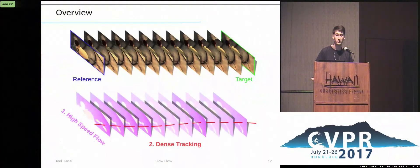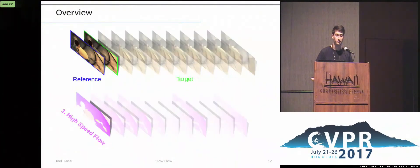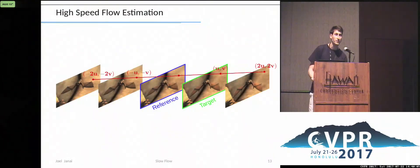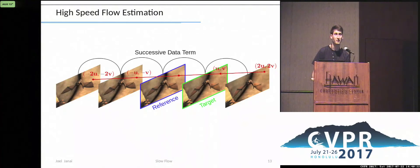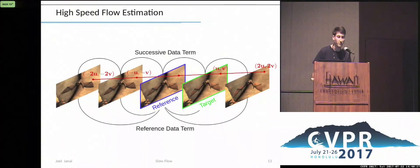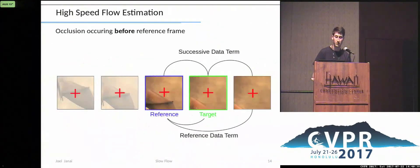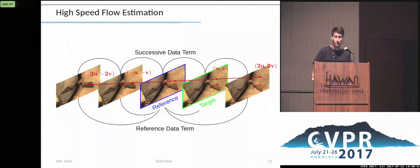Let's focus our attention on the estimation of the flow of consecutive high-speed frames. We use an extension of a classic formulation to reason over multiple frames in a symmetric window. The motion in high-speed frames is approximately linear. Therefore, we assume the flow to be constant in the symmetric window. We use two data terms: the successive data term measures the photoconsistency between successive frames, while the reference data term compares all frames to the reference frame. The symmetric linear formulation is problematic in case of occlusions, because dominant foreground motions propagate information into occluded regions.